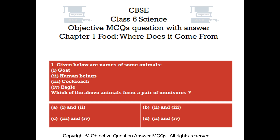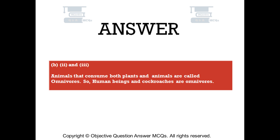The right answer is Option B — 2 and 3. Animals that consume both plants and animals are called omnivores. So, human beings and cockroaches are omnivores.